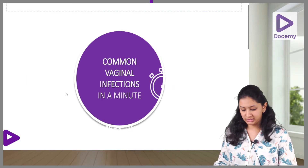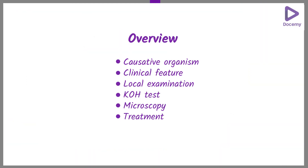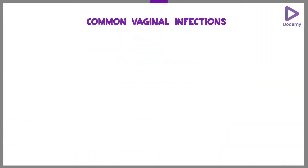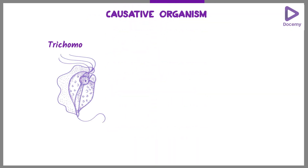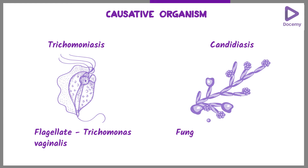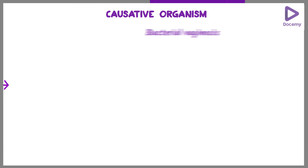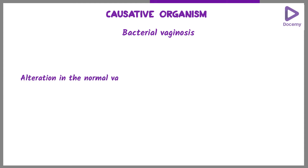Common vaginal infections which we see are Trichomoniasis, Candidiasis, and Bacterial Vaginosis. The causative organism in Trichomoniasis is a flagellate known as Trichomonas vaginalis. In Candidiasis it is a fungus known as Candida albicans. In Bacterial Vaginosis, it is actually an alteration in the normal vaginal flora.